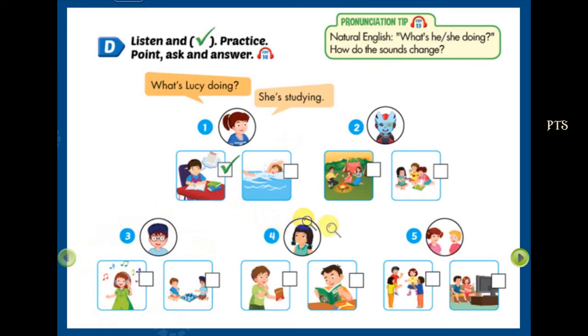Four: What's Mia doing? She's eating snacks. Five: What are Nick and Jane doing? They're talking with friends.